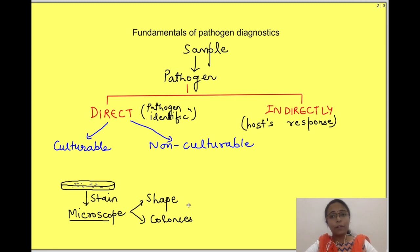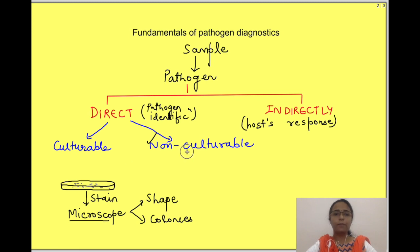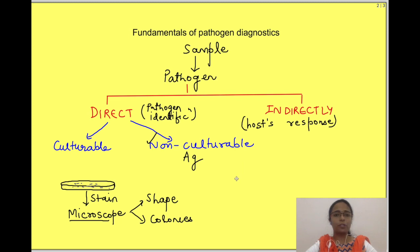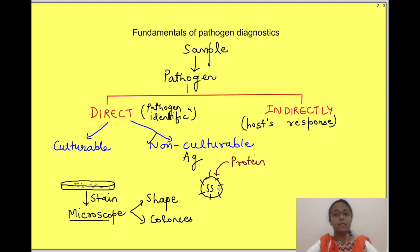All this cannot be done for non-culturable pathogens. For non-culturable pathogens, we have to detect the presence of pathogen antigens, which will directly establish the presence of the pathogen. These antigens are basically proteins present on the cell wall of the pathogen. That is why we need to know about the structure of the pathogen.